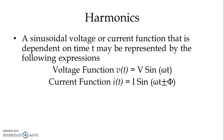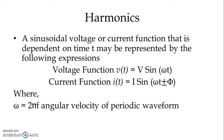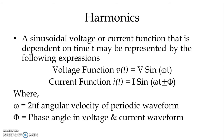We have taken voltage and current equations because they are the most important parameters when discussing power quality. Here ω = 2πf is the angular velocity of the periodic waveform, and φ is the phase angle. A plus sign indicates the current is leading the voltage waveform, and a minus sign indicates the current is lagging the voltage.